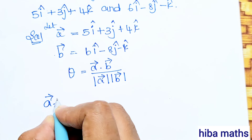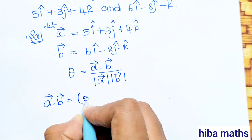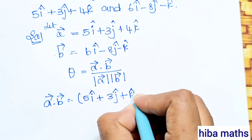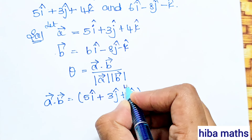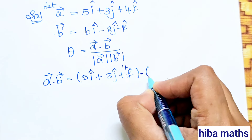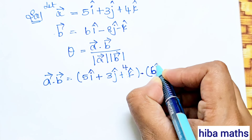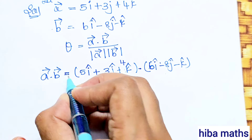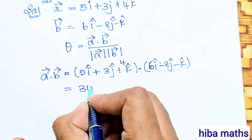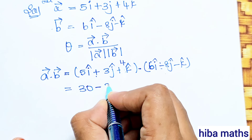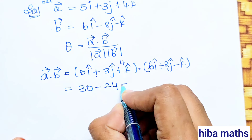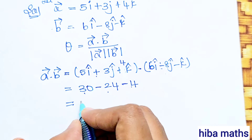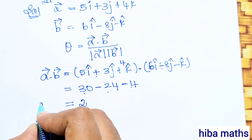We compute a vector dot b vector. a vector is 5i plus 3j plus 4k, dot b vector which is 6i minus 8j minus k. Multiplying: 5 times 6 is 30, plus 3 times minus 8 is minus 24, plus 4 times minus 1 is minus 4. So 30 minus 24 minus 4 gives 2. This is the a dot b value.